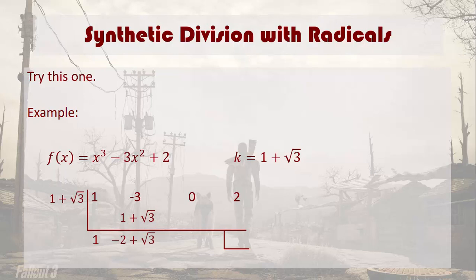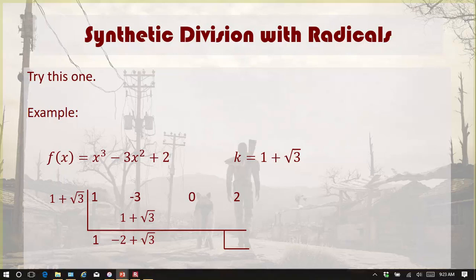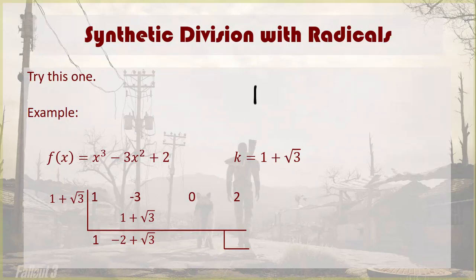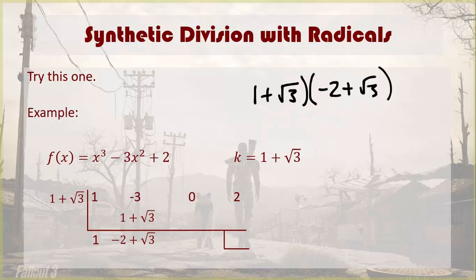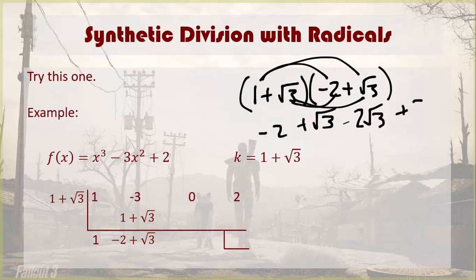Alright, now when you multiply that... When you multiply 1 plus the square root of 3 times negative 2 plus the square root of 3, you have to distribute the whole thing. Negative 2 plus the square root of 3 minus 2 square root of 3 plus 3.